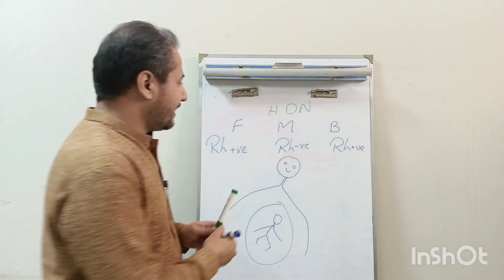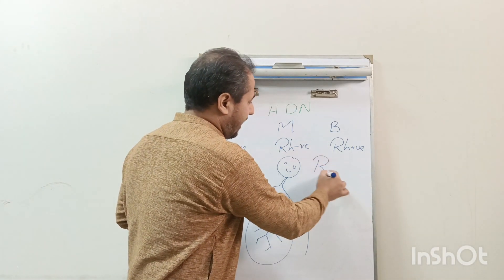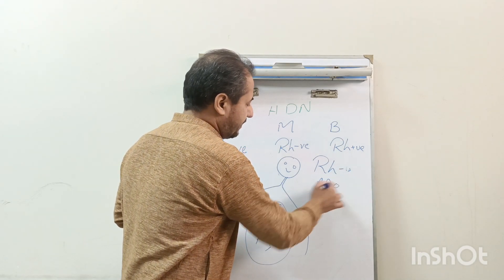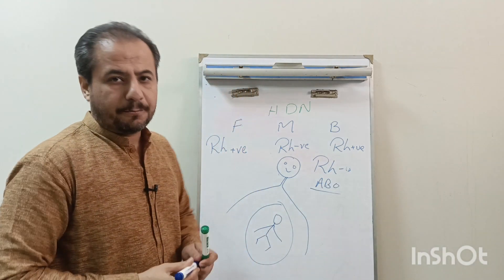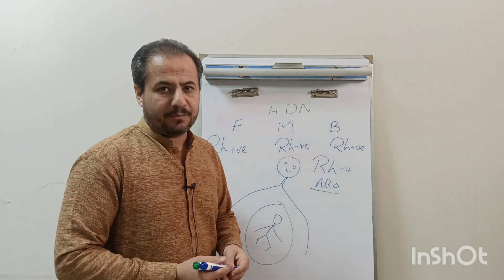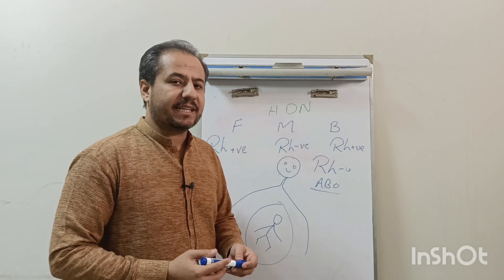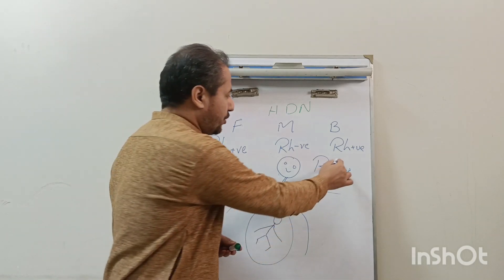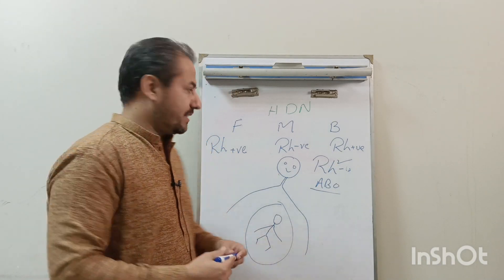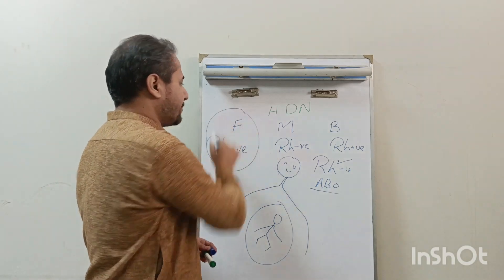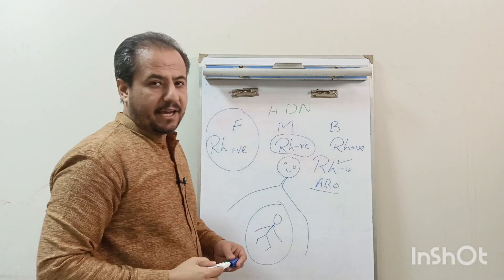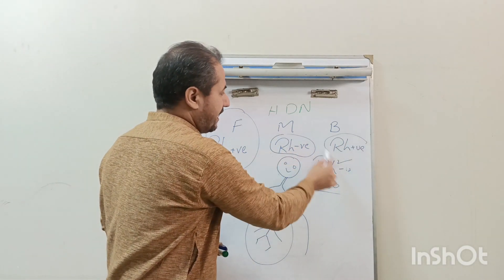In hemolytic disease of the newborn there are two types: Rh incompatibility and ABO incompatibility. Due to these two blood group incompatibilities, hemolytic disease of the newborn will occur. But the most important hemolytic disease of the newborn is due to Rh incompatibility, and how it occurs — it occurs if the father's blood group is Rh positive and the mother's blood group is Rh negative and the baby's blood group is Rh positive.